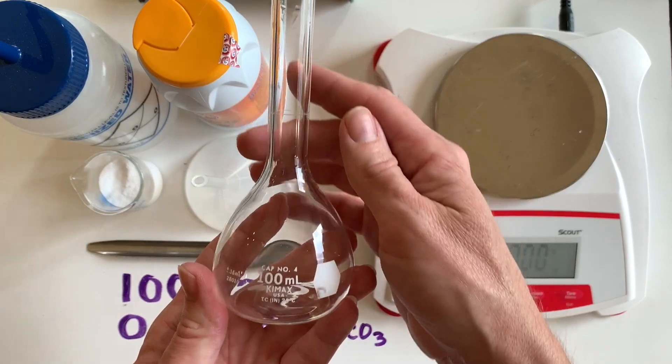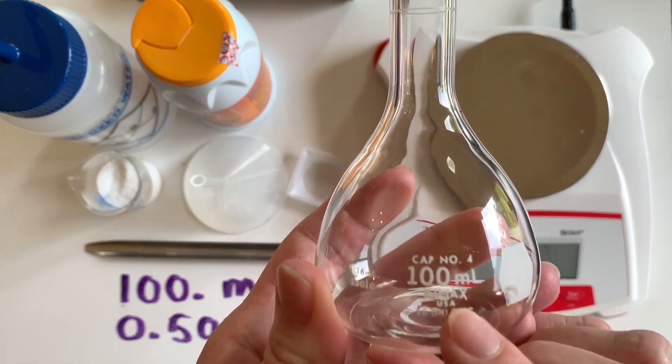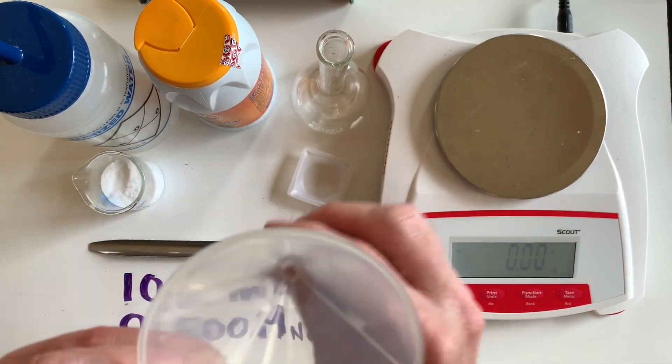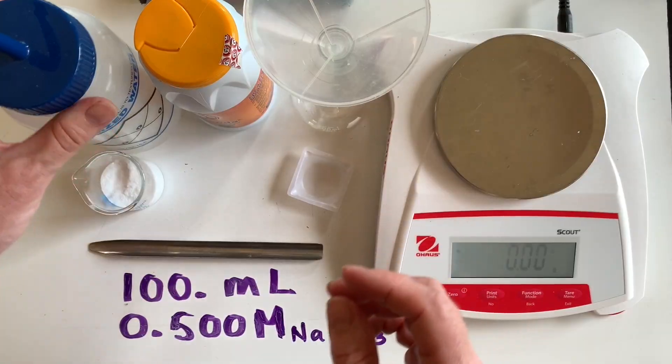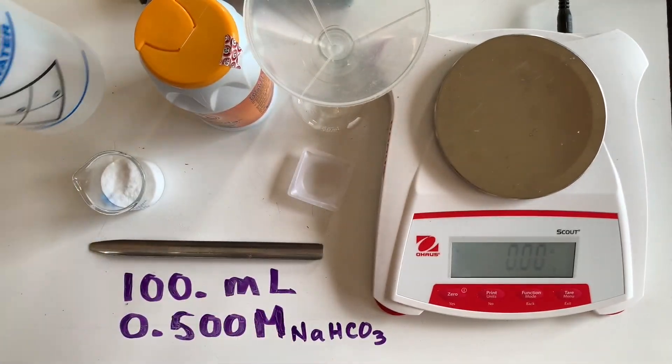You must use a volumetric flask to make your solution, in this case a 100 milliliter flask, and I'll be filling it to that one line that is 100 mils. A funnel is going to help me transfer the solid, and you'll also need to have some distilled water so that you have no other ions in this solution.